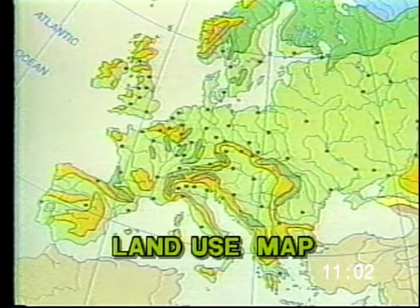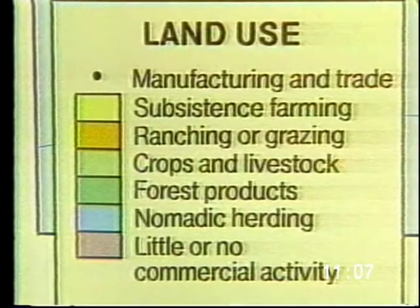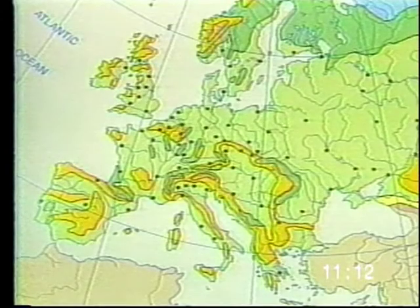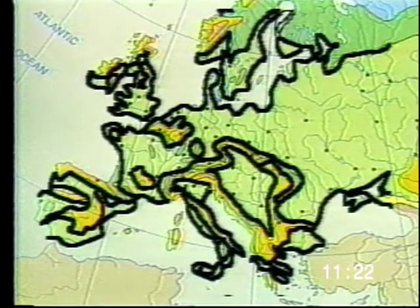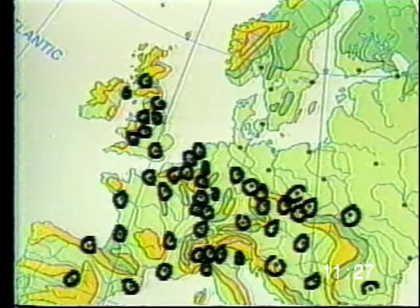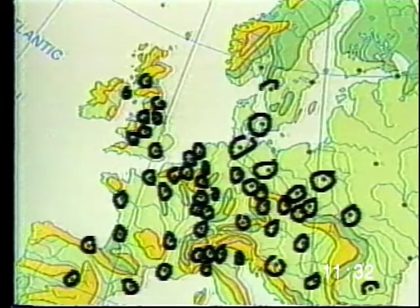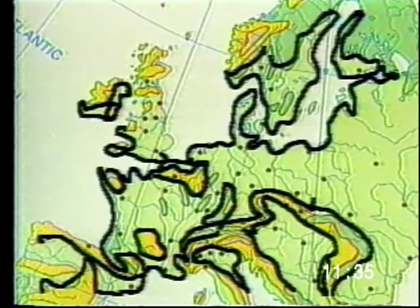Land use maps show how people make use of the land on which they live. Colors are used to indicate the predominant type of activity. The land use shown could be of a general nature, such as grazing, ranching, or forest products. Or it could be specific, identifying areas where a certain crop such as cotton or wheat is grown. According to this land use map of Europe, we can see that in spite of the heavy industrialization of much of the continent, agriculture — the raising of crops and livestock — is still the predominant use of land on the continent.